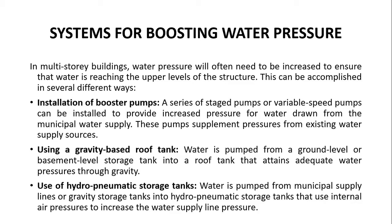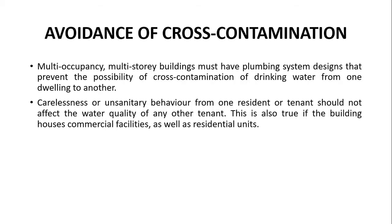The second system is a gravity-based roof tank. Water is pumped from the ground level or basement level storage tank straight into the roof tank, and then that water acquires sufficient pressure due to gravity as it reaches the lower stories. Of course, to pump water from ground level to the roof level, we still need a booster pump. Third, we use hydro-pneumatic storage tanks. Water from the municipal supply lines or gravity storage tanks is pumped into the hydro-pneumatic storage tank, which uses internal air pressure to increase the water supply line pressure, and then water is pumped at adequate pressure to the various stories in the building.